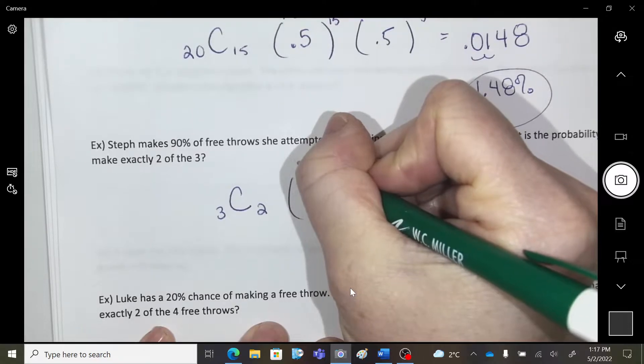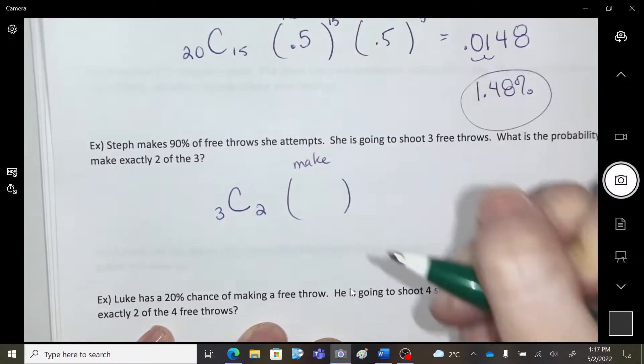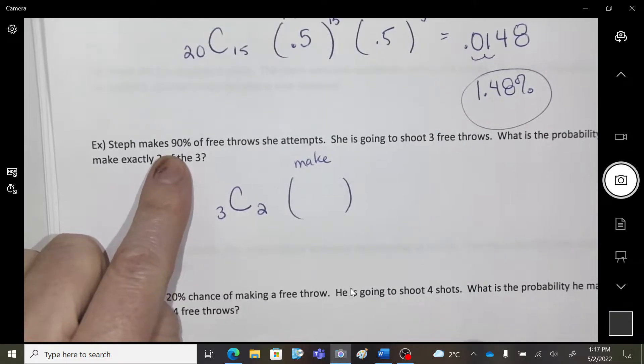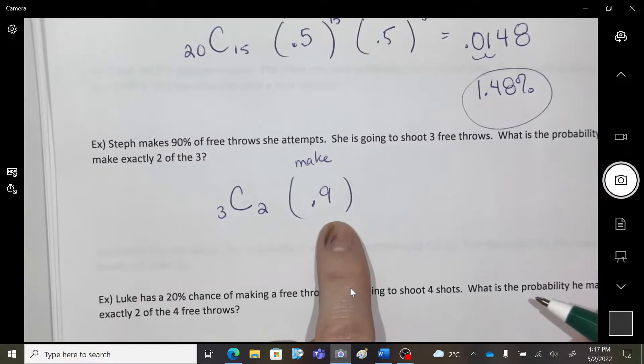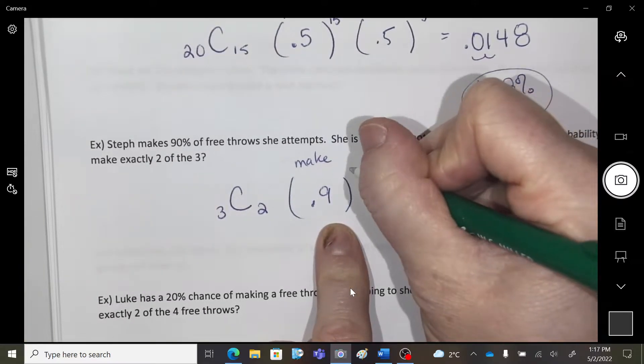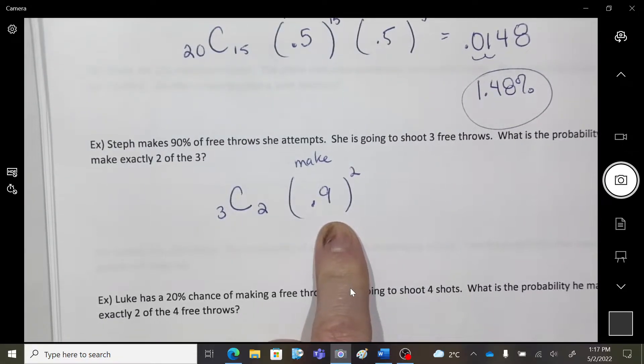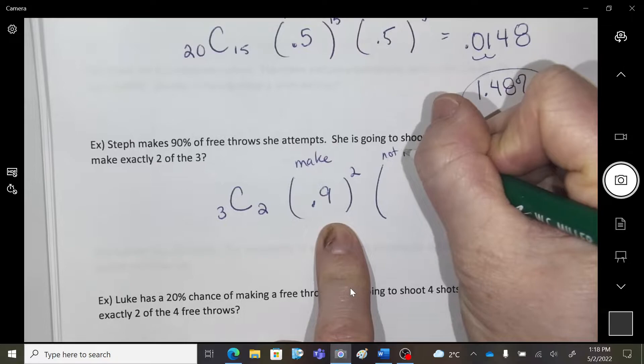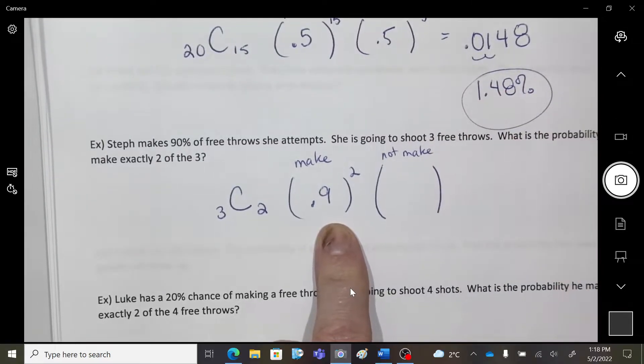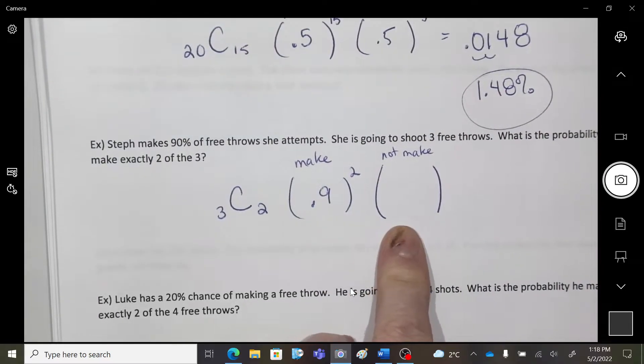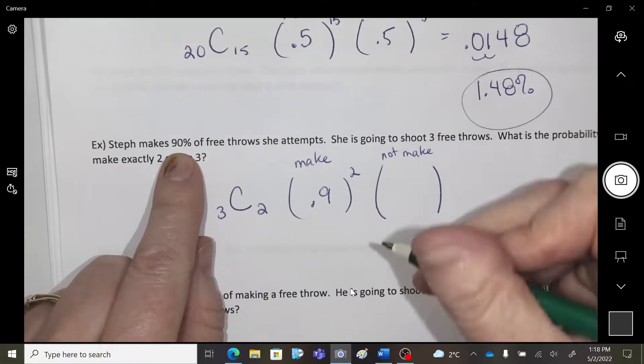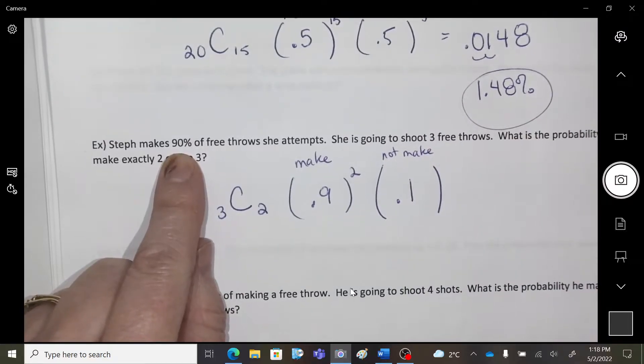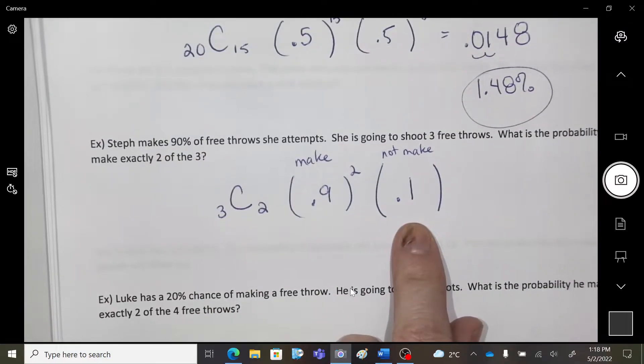What's the percent probability here that she's going to make? So we were given, there's a 90% chance, so 0.9. And how many shots are we wanting to make? Two. Now, this is the not doing that. So what's the percent chance that you're not going to make a shot? 10% chance.